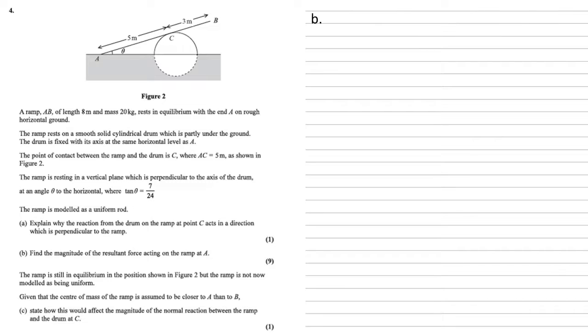For part B we need to find the magnitude of the resultant force acting on the ramp at A. First, label all the forces on the diagram. At A we've got the resultant force from the ground acting on the ramp, and because the ground is rough, we have a friction force going to the right. It's going to the right because it's stopping the ramp from slipping along the floor to the left.